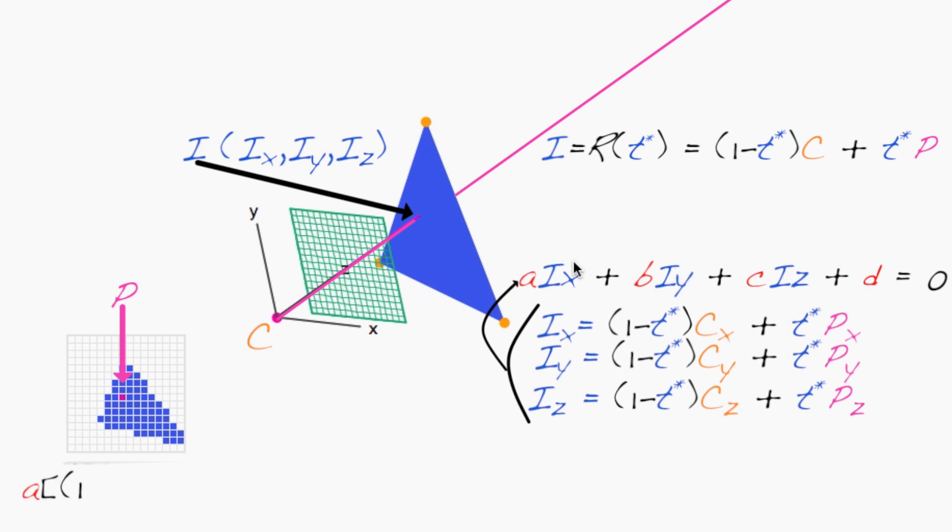This gives us one equation with only one unknown t*. But it turns out when you put all these substitutions in, it looks pretty scary.